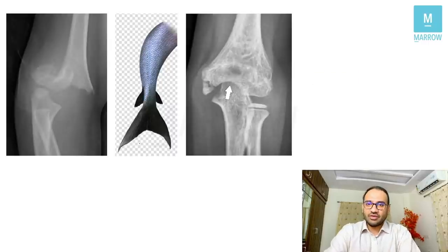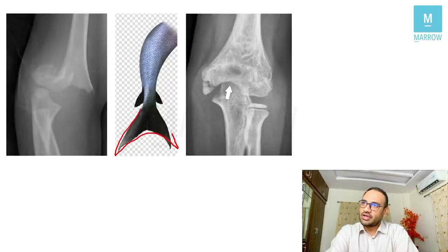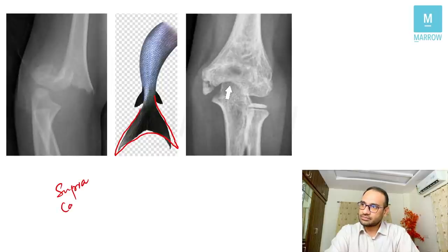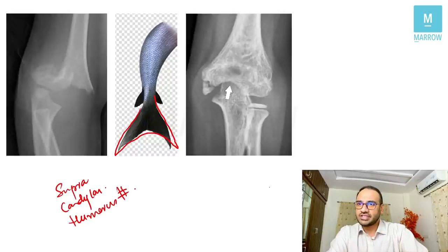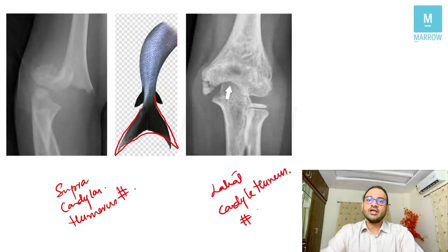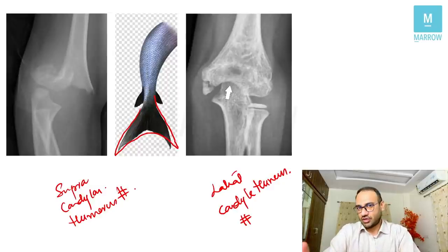Fish tail deformity can occur in two conditions you need to remember. The first is supra-condylar humerus fracture, and the second is lateral condylar humerus fracture. Both of these occur at the distal end of the humerus.